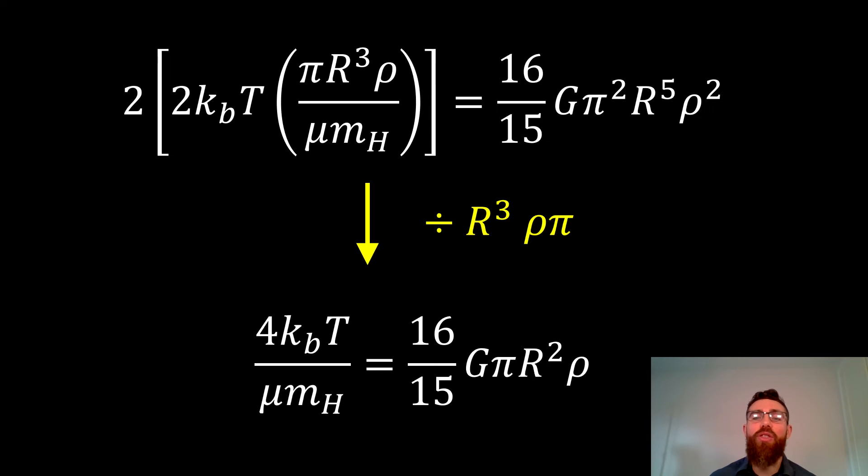If we divide through by the radius cubed, the density and pi, we can simplify it a little bit. Now we're left with the expression at the bottom, which has radius and density on the right hand side and your temperature on the left hand side. All the other ones are going to be constants.